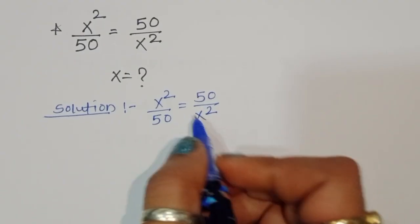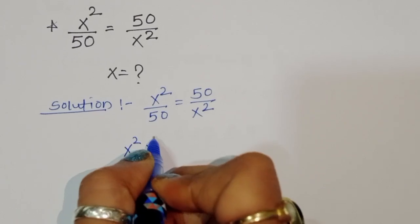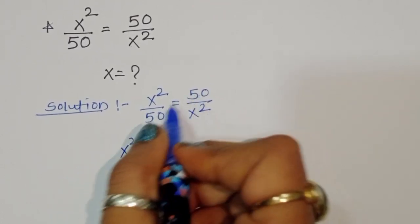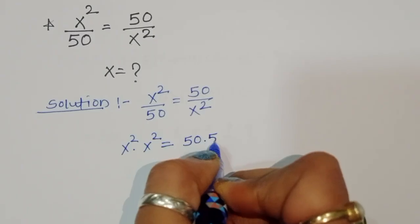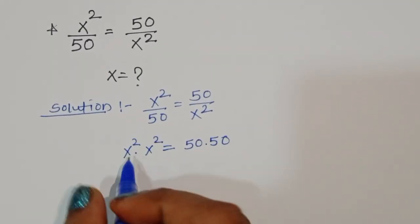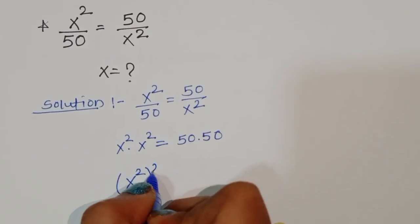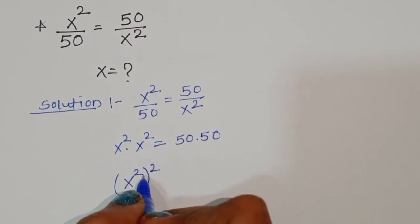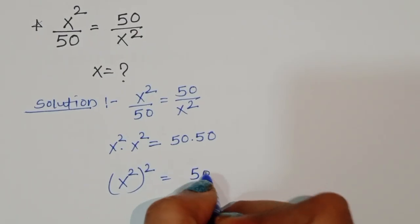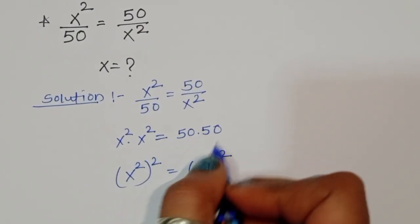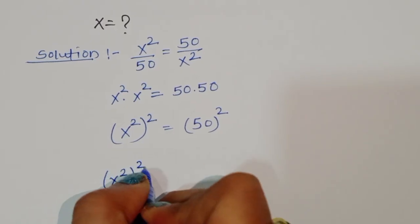We can do cross multiplication here. So x squared times x squared is equal to 50 times 50. We can write x squared whole square, which becomes x to the power 4 is equal to 50 squared.